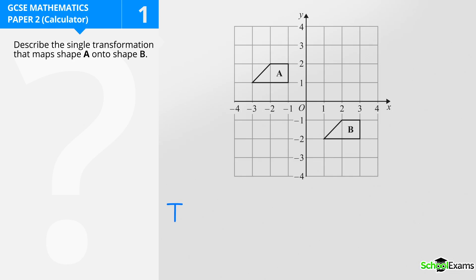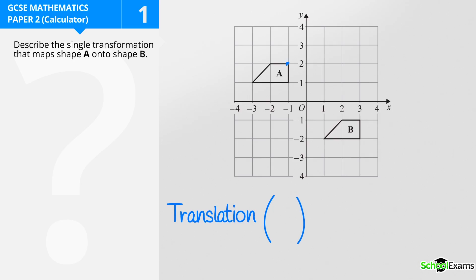Now, this is a translation. So the first mark I'm going to achieve is for writing the word translation. And how do we describe a translation? We describe it in vector form. I'm going to take any one point. I'm going to go across 1,